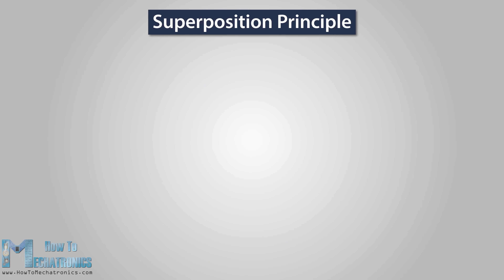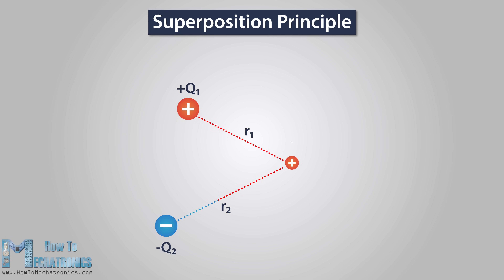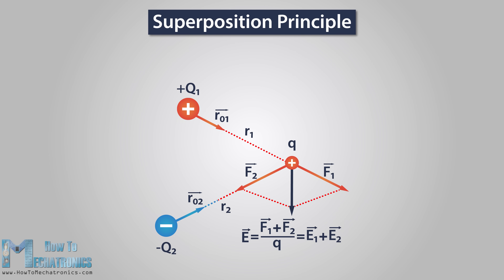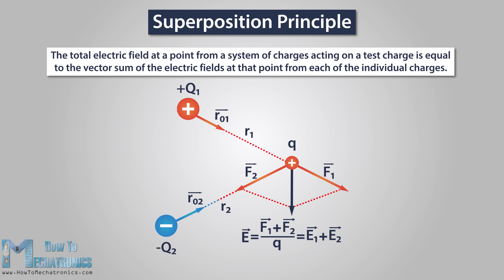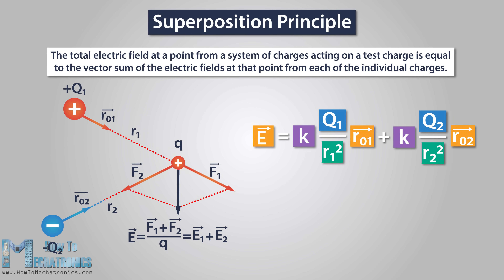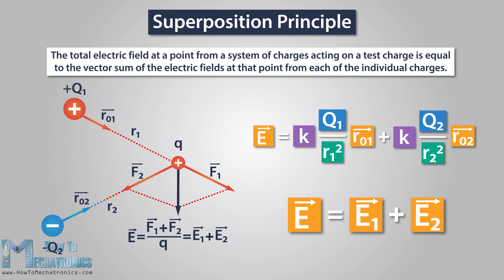The superposition principle applies to electric fields as well. Let's say we have two point charges, Q1 and Q2, and we bring a positive test charge Q nearby. Q1 is a positive charge and Q2 is a negative charge. The force that Q1 applies on Q is repulsive, and the force that Q2 applies on Q is attractive. The superposition principle helps us calculate the total electric field created by multiple point charges, which is simply the sum of all individual fields. The total electric field from a system of charges acting on a test charge is equal to the vector sum of the electric fields at that point from each individual charge. Using the equation for electric field, the total electric field E is equal to E1 plus E2.